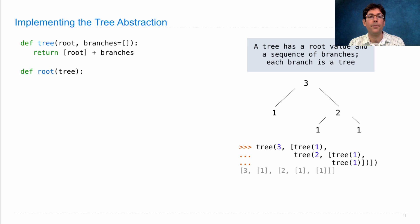The root of a tree is a function, a selector function, that selects the element at index 0. That's exactly where we put the root when we constructed the tree. And the branches are all of the elements of the tree starting at index 1, so not including the root, which is exactly where we put the branches. So this constructor and these two selectors allow us to build trees.